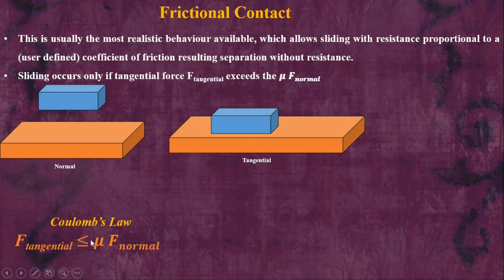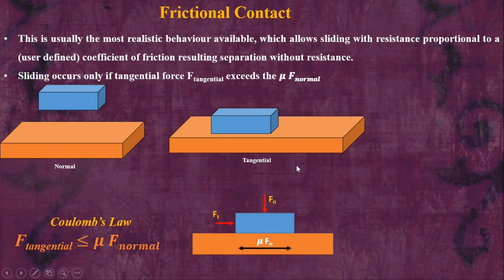As per Coulomb's law, F-tangential is directly proportional to mu times F-normal. That is the law which governs frictional contact. In this free body diagram, the body will only move when Ft exceeds the product of the coefficient of friction and F-normal.